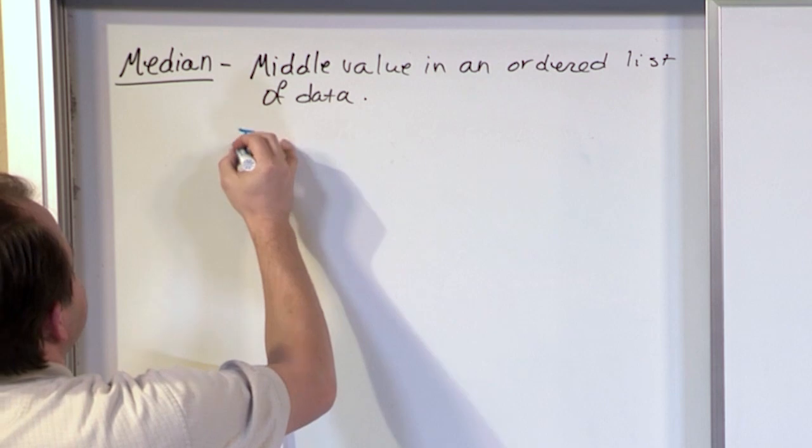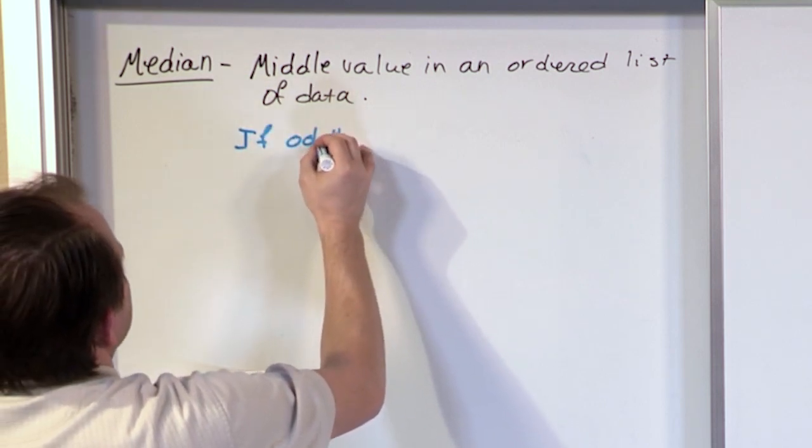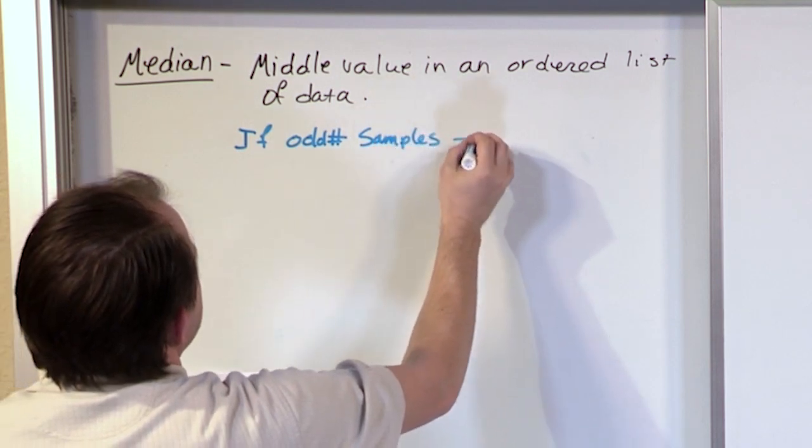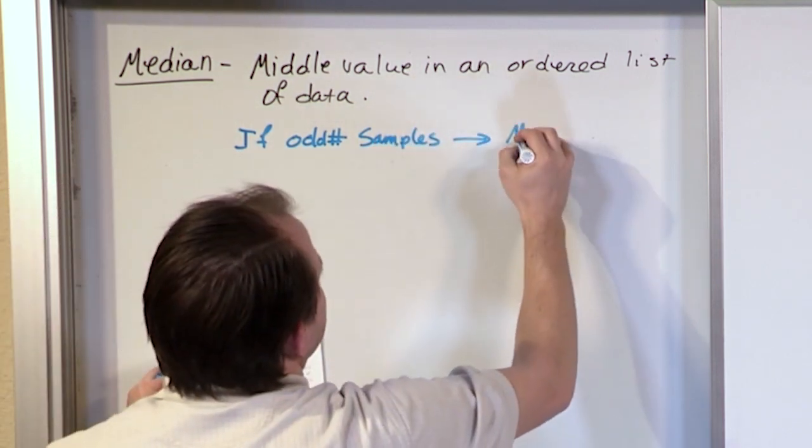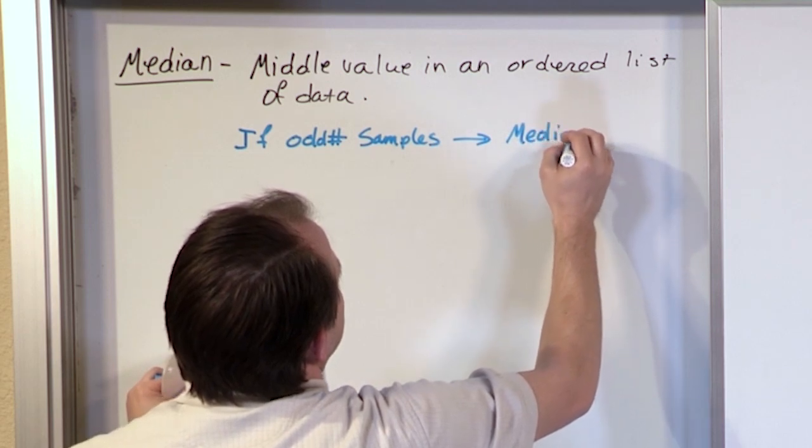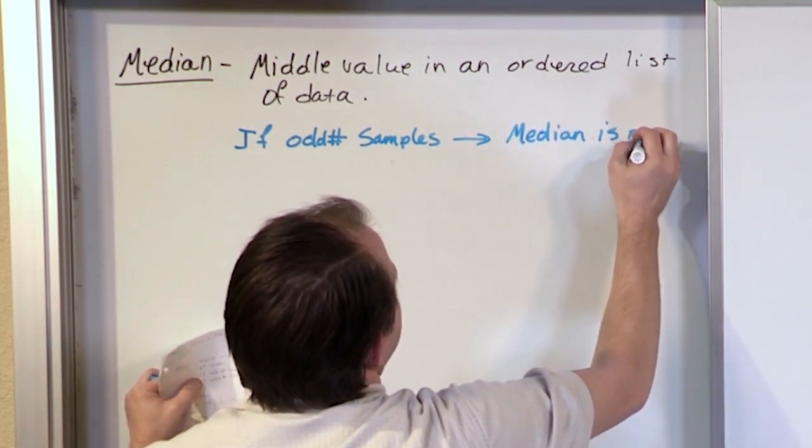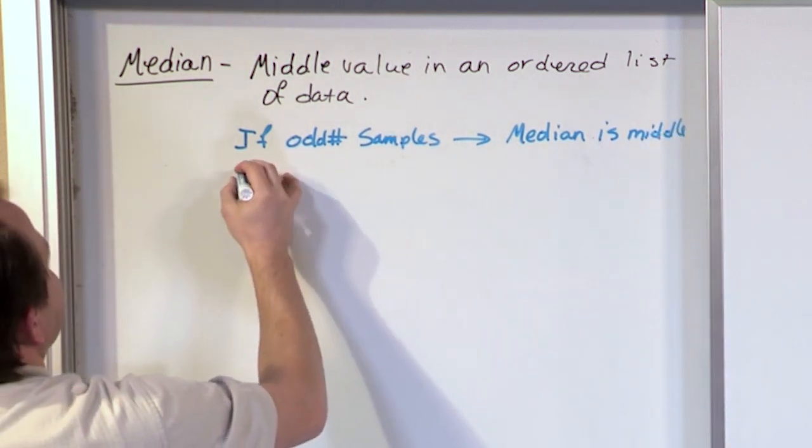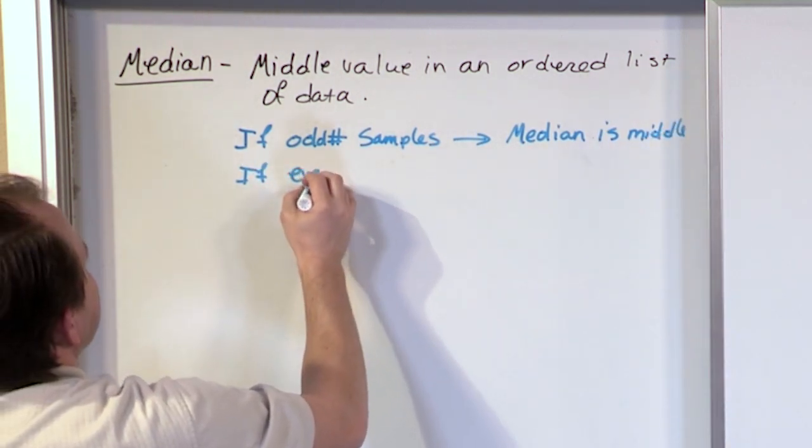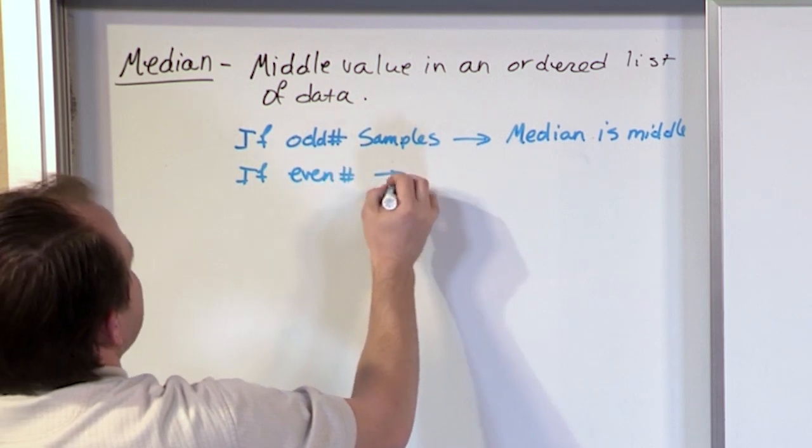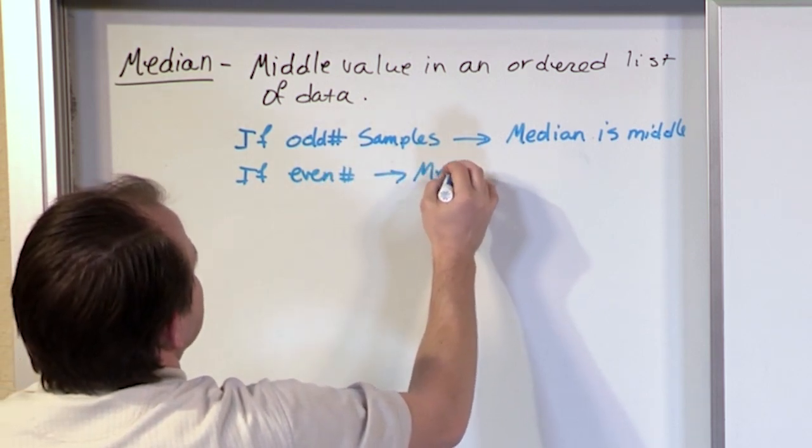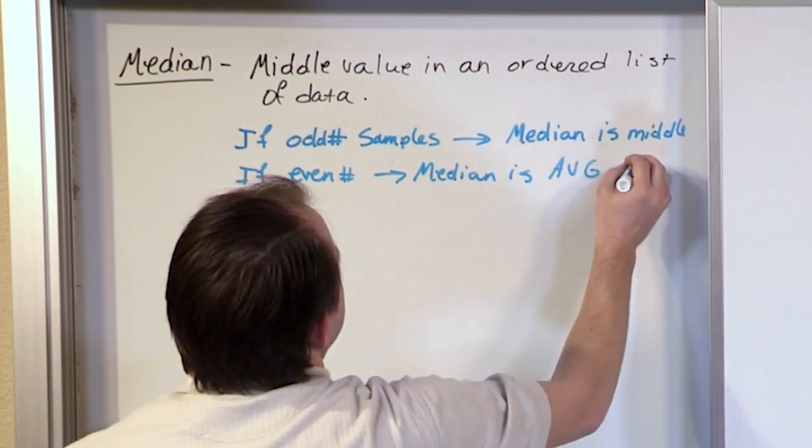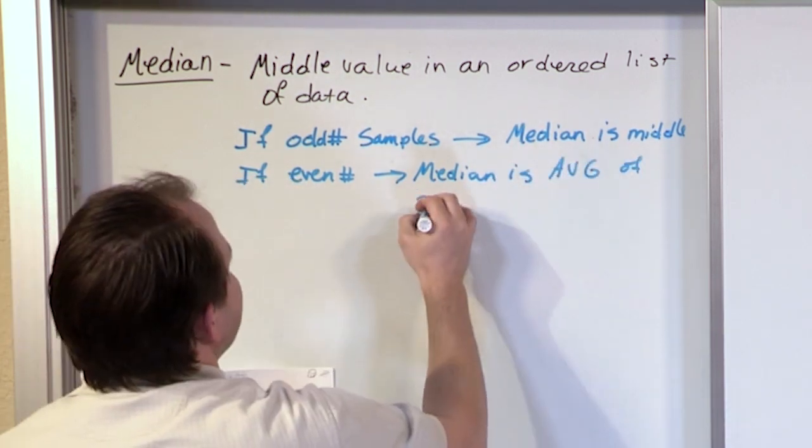Which is defined to be literally the middle value in an ordered list of data. So it's literally not much of a calculation at all. It's literally the middle value. You line your values up and you choose the one in the middle, and that's called the median. So just to kind of expand on this a little bit or make it even clearer. Remember, if odd number of samples, then the median is the middle value. And we'll do an example in a second. But if it's an even number of samples, then the median is the average of two middle samples.